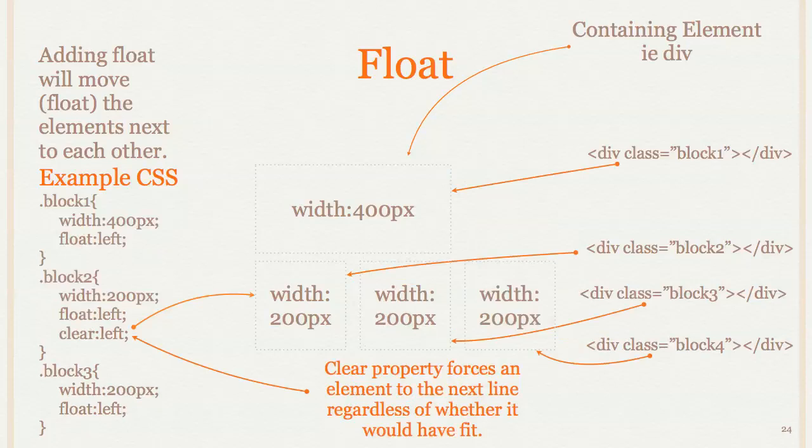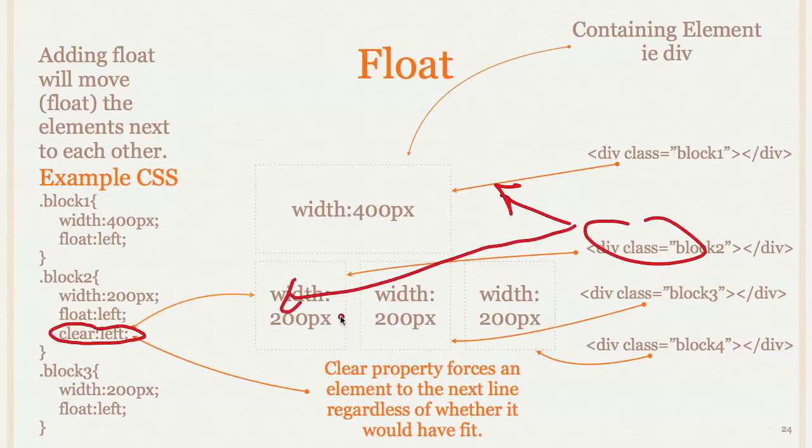Now the other thing you can do with floats is you can force the next element to go to a new line essentially by using the clear property. So in this case, clear left has been applied to block two. So instead of being where it normally would be, which is right there, because it's been cleared, it moves down to the next line. And so that's what clearing does. And if it's float left, clearing left clears it, float right would clear a float right, clear right would clear float right. And if you're not sure or you want to just be safe, you can write clear both. And that would clear it whether it was floated left or right.